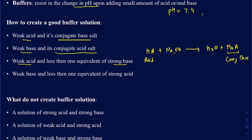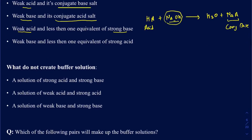You want to have the weak acid and its conjugate base, or the weak base and its conjugate acid. As long as you don't add too much base, it's going to keep making that conjugate base and creating the buffer solution. If you go over one equivalent of NaOH, that's when you don't really create a buffer solution. The same story applies when you have a weak base — having less than one equivalent of strong acid still gives you the potential to create a buffer solution.